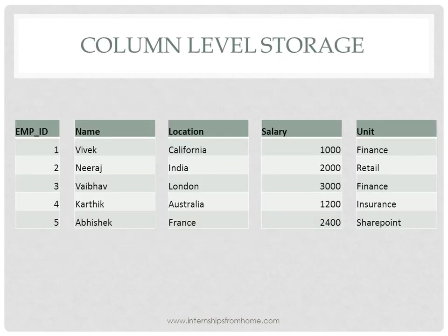Now let's understand how data is stored in column level storage and how it differs for the same business scenario. In column level storage, each column is stored as a separate file — entirely different from row level storage where all columns of a row are bound together. So we have employee ID as one file, name as another, location as another, and so on.